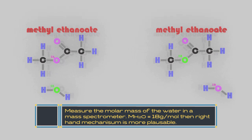So that must be the oxygen with less neutrons, and that means that the oxygen in the water actually comes from the carboxylic acid. The mechanism on the right is more plausible.